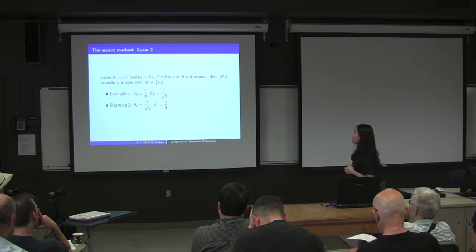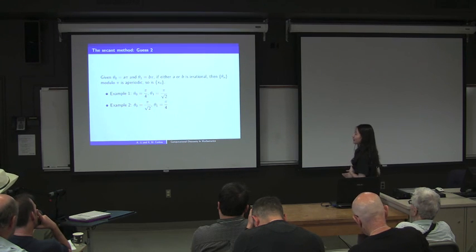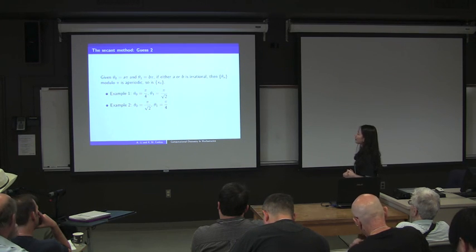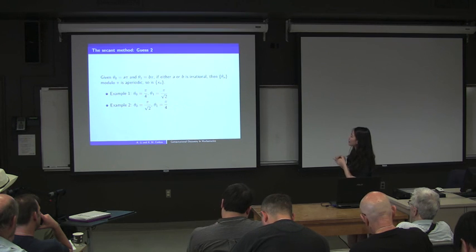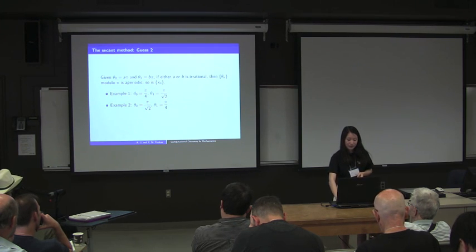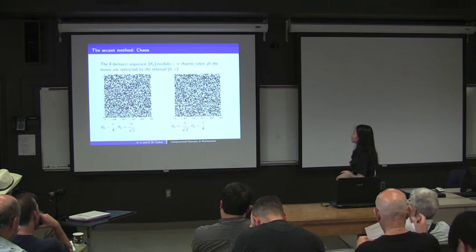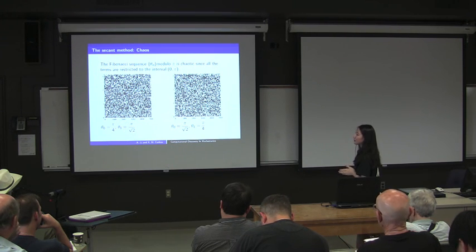Another conjecture: if either of the two initial angles is an irrational multiple of π, then both the sequence of angles modulo π and the iteration sequence are non-periodic. Two examples are given: Example 1 with θ₀ equals π over 4 and θ₁ equals π over √2; Example 2 with the order of the two initial angles swapped. Focusing on the Fibonacci sequence of angles modulo π, both give non-periodic bounded systems — chaotic behavior.